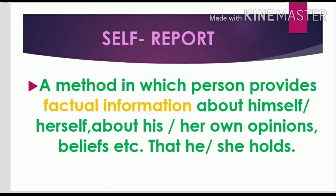The fifth and last method of assessment is self-report. Self-report is a method in which a person provides factual information about himself or herself — about his or her own opinions, beliefs, etc. Factual information here means real information. The psychologist must trust that whatever information the person is providing is indeed real information. That is the self-report method.